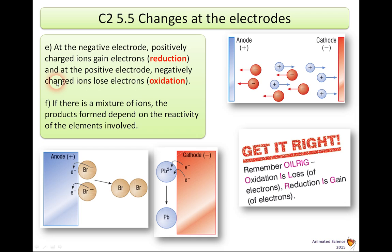At the positive electrode, negatively charged ions lose electrons. This is called oxidation. There's a nice tip to help remember this: OIL RIG — oxidation is loss of electrons and reduction is gain of electrons.